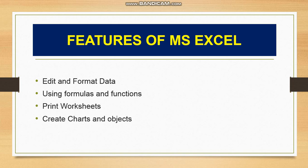The third feature is printing of worksheets. Whatever text we have entered in a worksheet, we can print that data. A printed copy on paper is called a hard copy. We can also create charts and objects based on our data — different types of shapes, auto shapes, and word art can be added in Microsoft Excel.